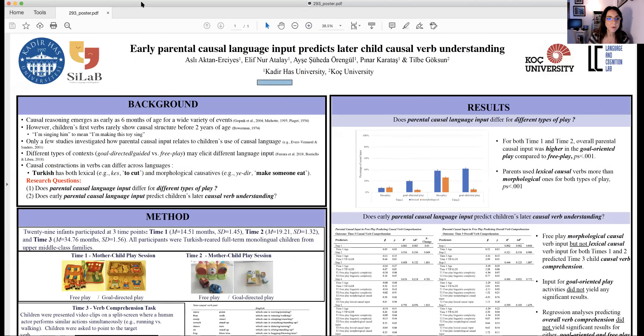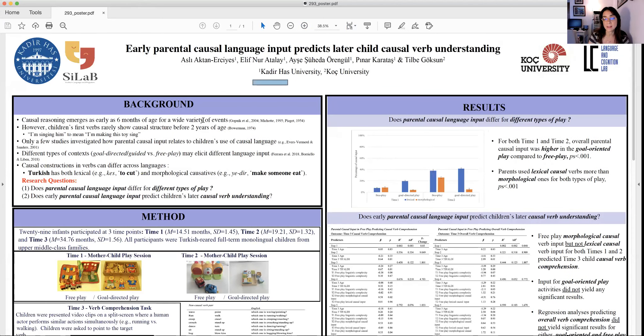Causal reasoning emerges as early as six months of age for a variety of events. This is causal understanding. However, children's first verbs rarely show causal structure before two years of age. For instance, a child may say 'I'm singing him' to mean that I'm making this toy sing.